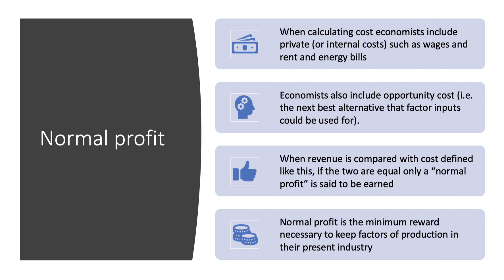Now, when the revenue is compared with cost — broadly defined, so internal cost plus opportunity cost — if the two are the same, then we say that a normal profit is being earned. Basically, if you cover your costs including opportunity cost, then you're making normal profit. And the best definition to use in the exam is that normal profit is the minimum return needed to keep factors of production in their present industry, in their present use.